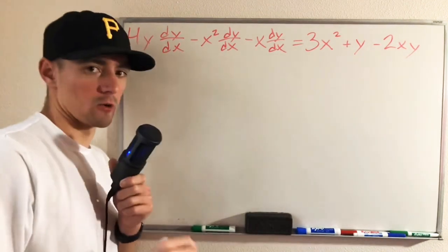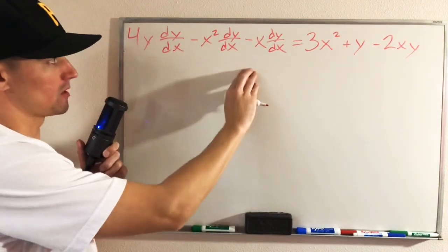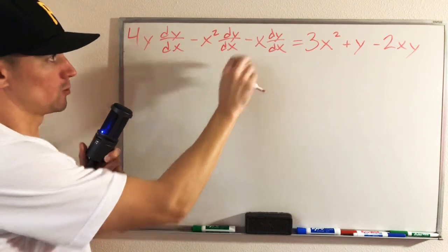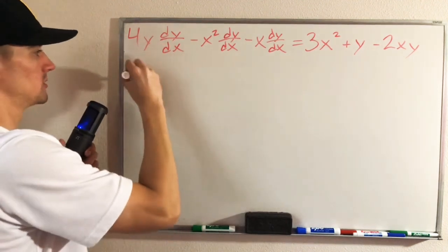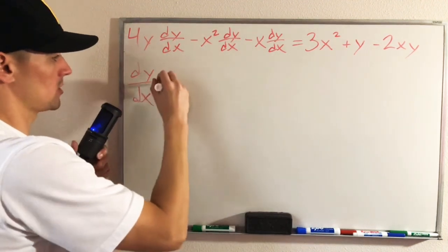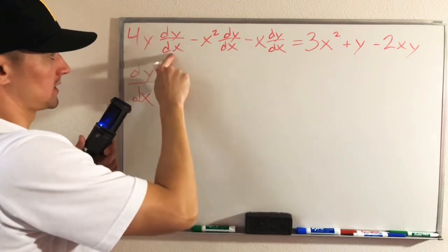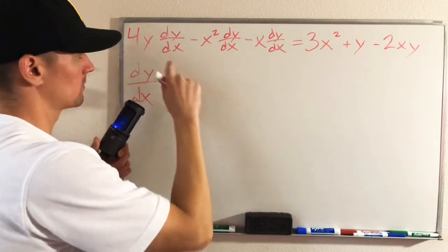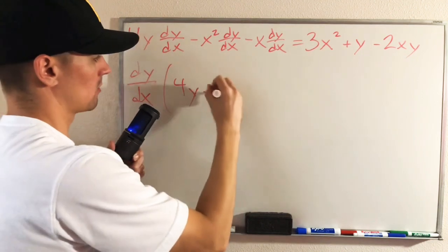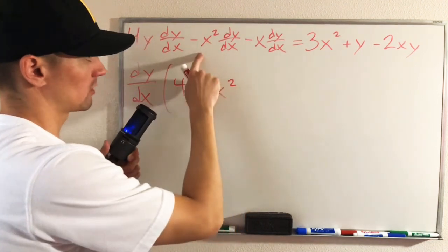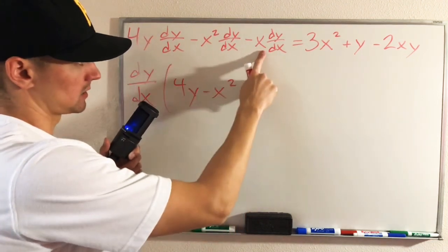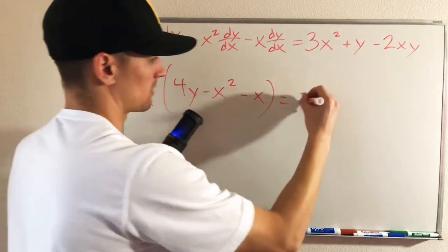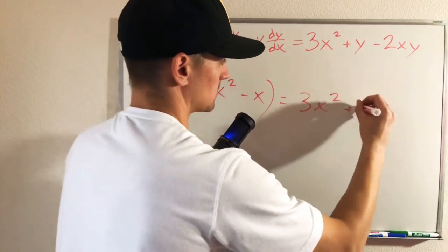So now what we can go ahead and do, since every term over on the left side of our equation has dy/dx in it, we can factor that out. If we pull dy/dx out of the left side — taking the dy/dx out of this term, we'll be left with 4y; take the dy/dx out here, we'll have negative x squared; take the dy/dx out here, we're going to have negative x. And then the right side of our equation we'll just leave as is.